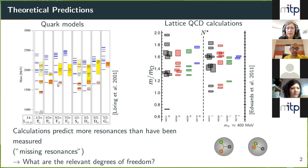Another feature visible in this model is that at higher masses, more states were predicted than had been observed at that time. As you can see in one of my later slides, a lot of these states have since been found. There is much investigation into why so few states at high masses were observed then. Another feature can be observed when comparing both different predictions.